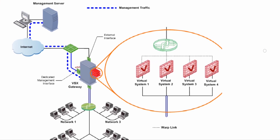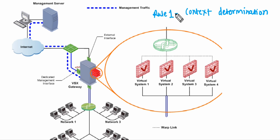Rule number one is context determination. This is the first rule — the way VSX helps with traffic management. In context determination, VSX incorporates VRF, a term you may have heard about in the Cisco world.